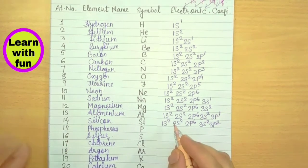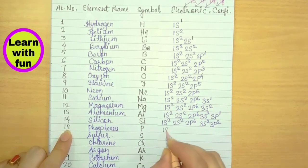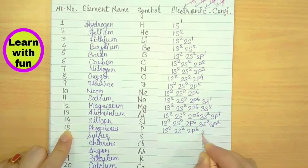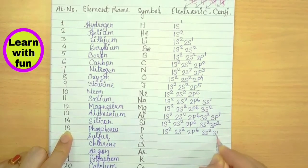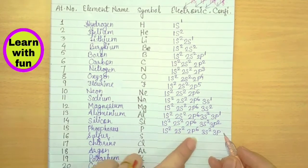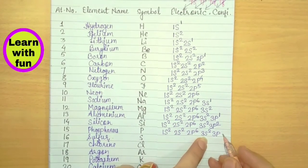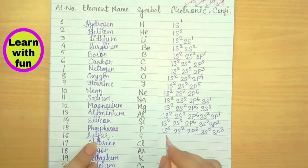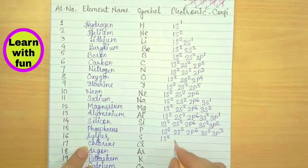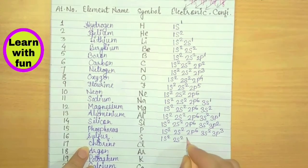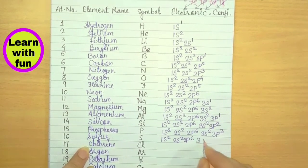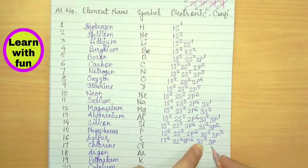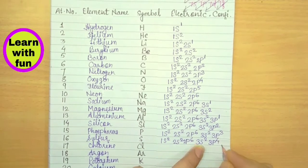Phosphorus has 15 electrons: 1S2, 2S2, 2P6, 3S2 accounts for 12 electrons, and the remaining 3 go into 3P3. Sulfur has 16 electrons: 1S2, 2S2, 2P6, 3S2 fills 12 electrons, and the remaining 4 go into 3P4.